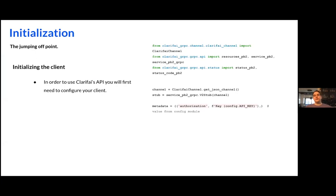What we have here is a little bit of a code snippet that shows the initialization of the client. For this presentation, I've decided to focus specifically on the Python client. Clarify does have a number of gRPC clients that we have released publicly so that you can interact with the platform through a number of different programming languages, such as Java, JavaScript, Python, Go, etc. All of those will also be available on docs.clarify.com if you want to look at a specific language implementation. But due to the breadth and popularity of Python, I thought that this would be the best way forward.